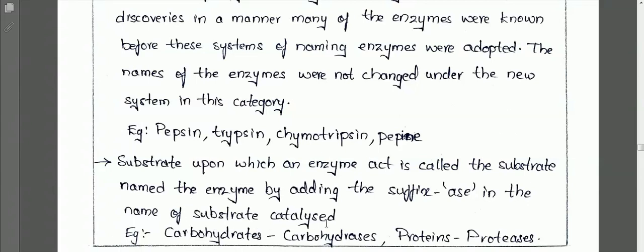All enzymes are proteins, and these protein components are used to increase the reaction rate for different kinds of chemical reactions in biological systems at unfavorable conditions. These enzymes work in biological systems to increase the rate of reactions, and that's why we call them biological catalysts.